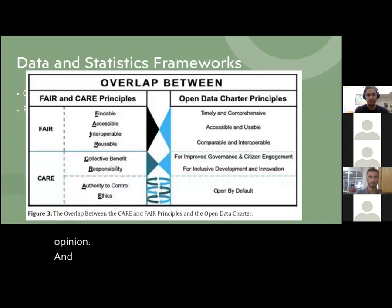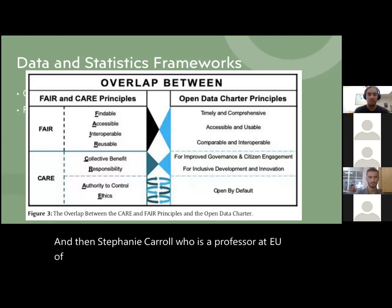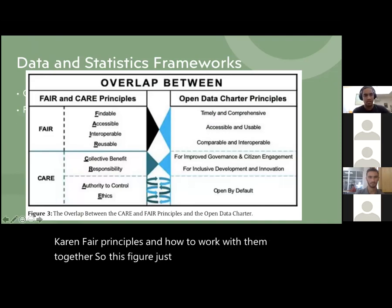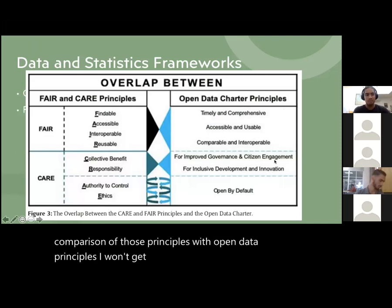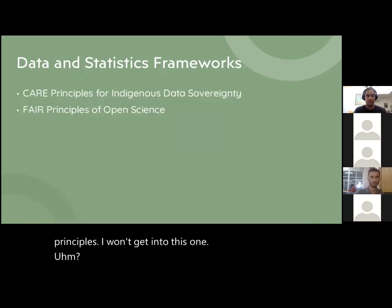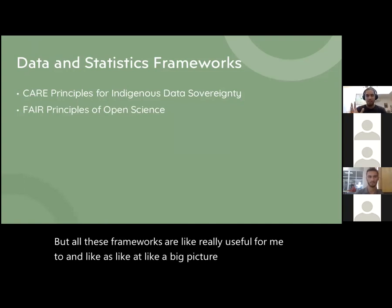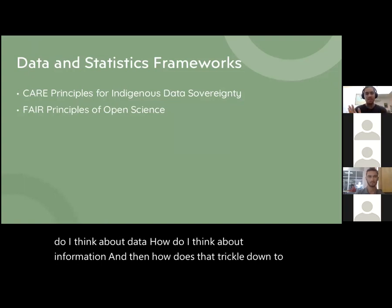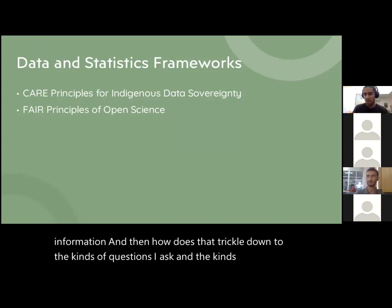Stephanie Carroll, a professor at UVA, has written about the overlap between the CARE and FAIR principles and how to work with them together. This figure gives a quick comparison of those principles with open data principles. All these frameworks are really useful for thinking at a big-picture, high level: how do I think about data, how do I think about information, and how does that trickle down to the kinds of questions I ask and the kinds of statistics I run?